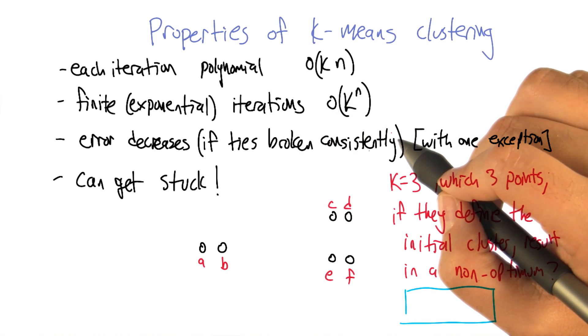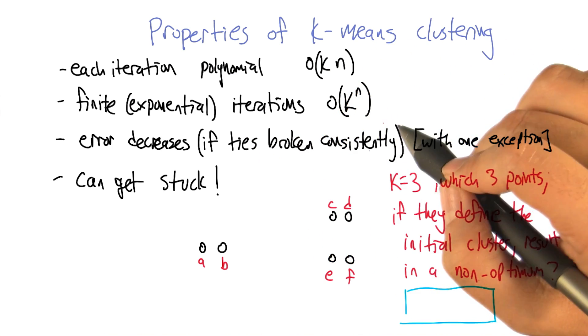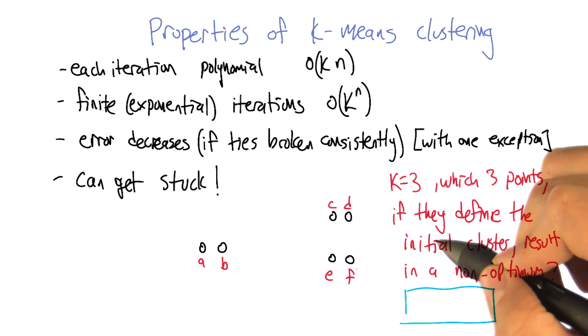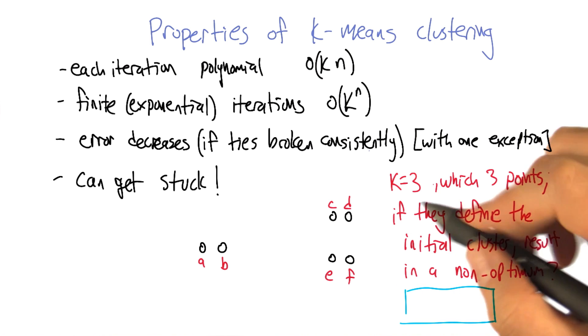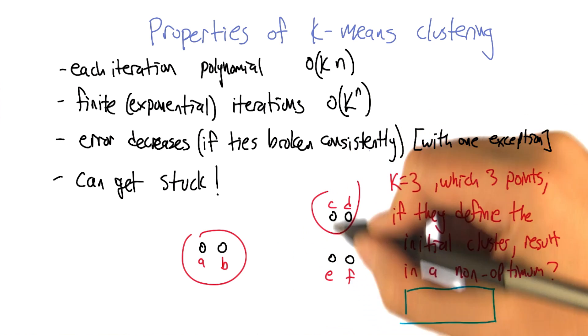But there is something that we didn't talk about that I think is really important to think through. So here's a set of six points. If I was going to ask you to make three clusters of this, what would you do? I'd put A and B together, C and D together, and E to F together.